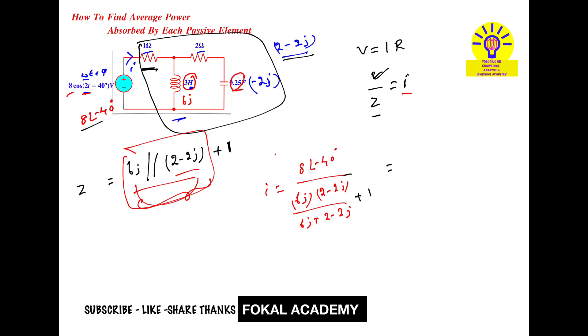Using a calculator to get the value of current I in phasor form, we get I = 1.6828 ∠-25.38°. This is the current passing through the 1 ohm resistor.